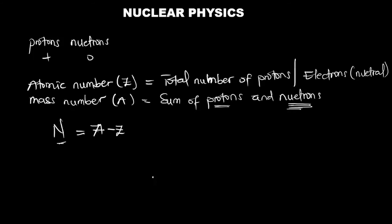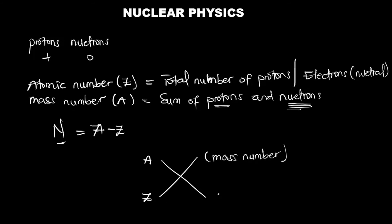An atom can be represented as X with A at the superscript (top) and Z at the subscript (bottom). The A at the superscript is the mass number, and the Z at the subscript is the atomic number. This is just a standard representation of the atom.